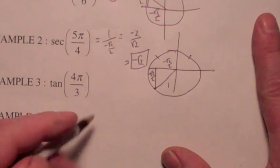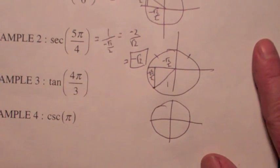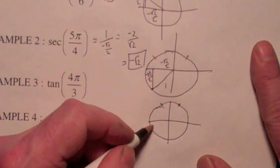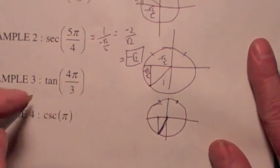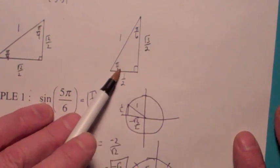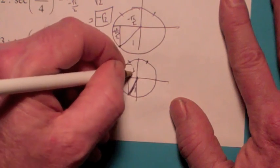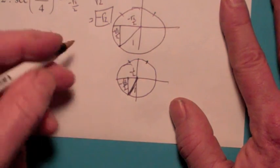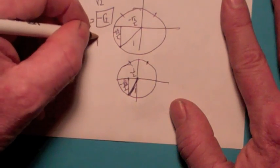Tangent of 4 pi over 3 — draw a picture. Counting by pi over 3's: 1 pi over 3, 2 pi over 3, 3 pi over 3, and 4 pi over 3 puts you in the third quadrant. Use the pi over 3 reference triangle in the third quadrant: this would be 1, this would be negative 1 half, and this would be negative radical 3 over 2. The tangent is y over x, so it's negative radical 3 over 2 divided by negative 1 half, which is radical 3.